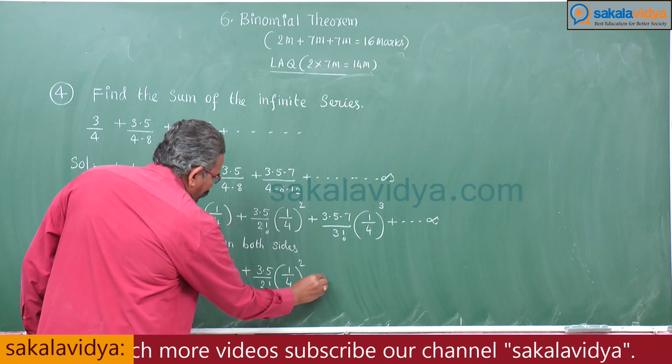So 1 + S = (1 − x)^(−p/q) = (1 − 1/2)^(−3/2) = (1/2)^(−3/2) = 2^(3/2). This equals (√2)³ = 2√2. Therefore S = 2√2 − 1. This is the required sum.